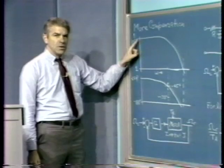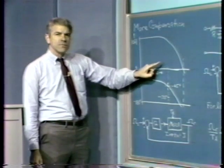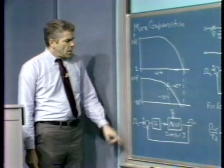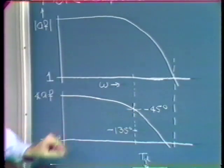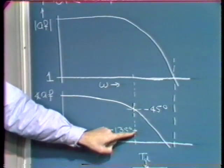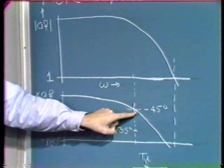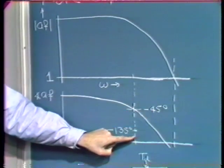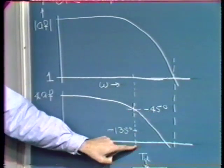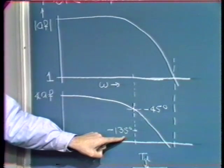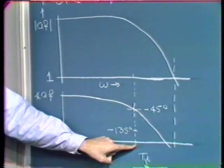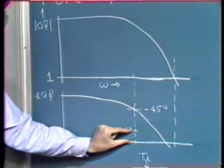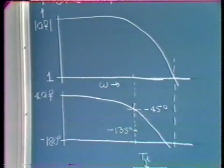If I add a single pole well below crossover, by the time I get out to the crossover frequency, the phase shift associated with that pole will be very nearly minus 90 degrees. I look at the original uncompensated Bode plot and find the frequency where the phase shift is minus 45 degrees. Adding an additional 90 degrees of negative phase shift would give minus 135 degrees at that frequency — 45 degrees of phase margin. If I can force crossover to occur there by adding a single pole at a sufficiently low frequency, I achieve that objective.